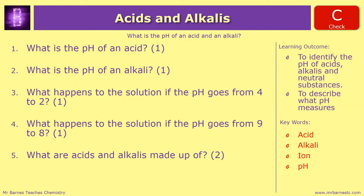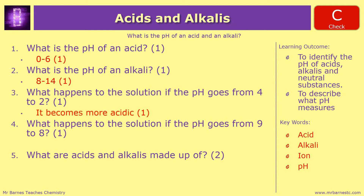Let's go through. Question 1: what is the pH of an acid? You could have got any number between 0 and 6. Make sure you don't put 7, because obviously that's neutral. Question 2: the pH of an alkali is anything between 8 and 14. Question 3: what happens to the solution if the pH goes from 4 to 2? It's going down, therefore it's becoming more acidic.